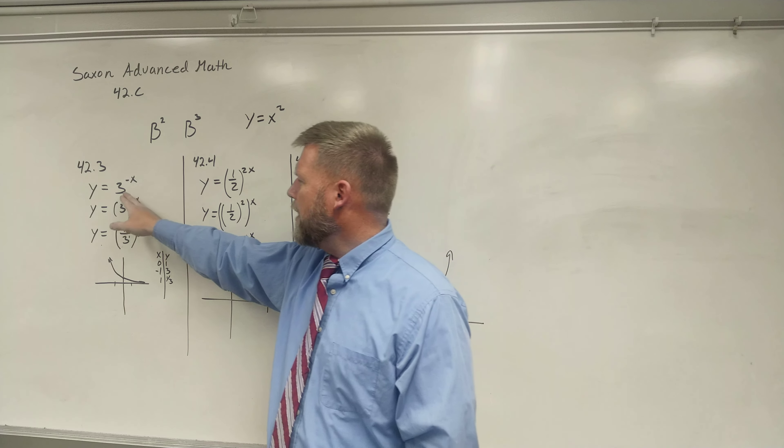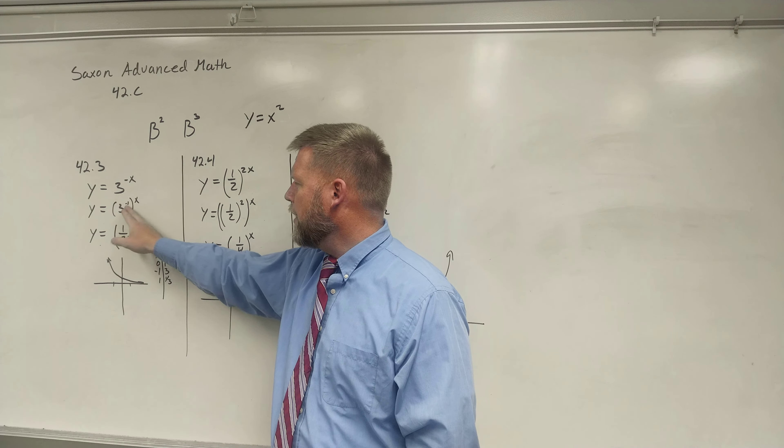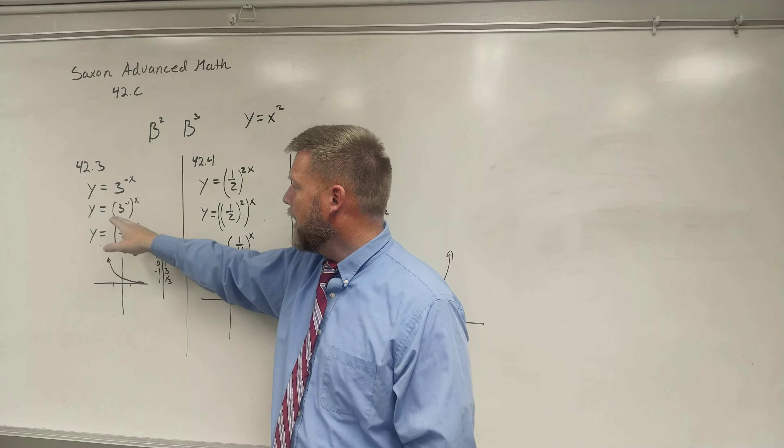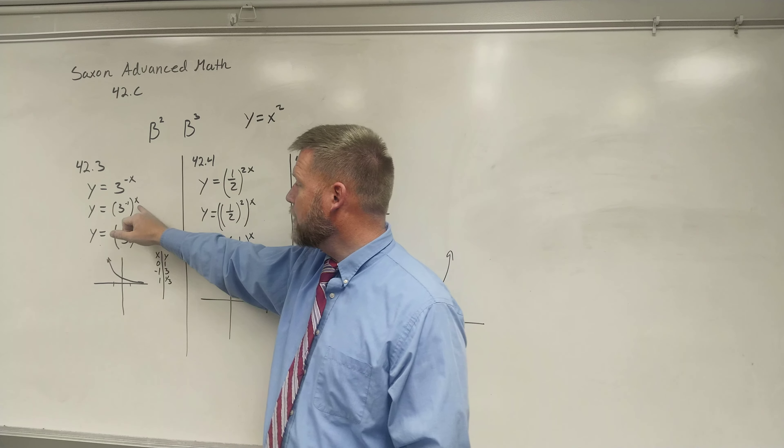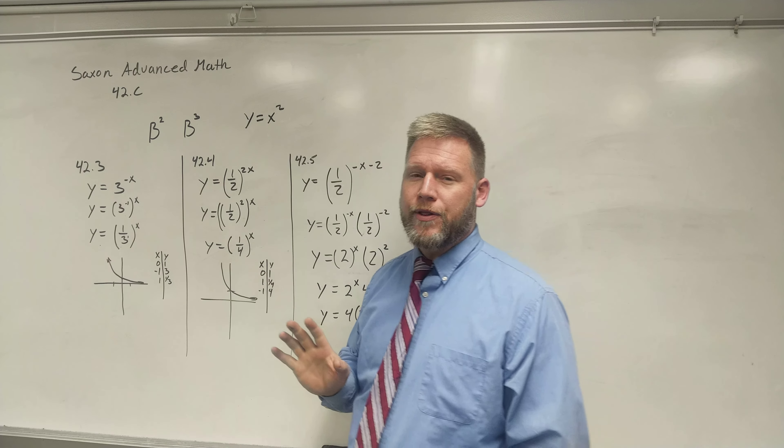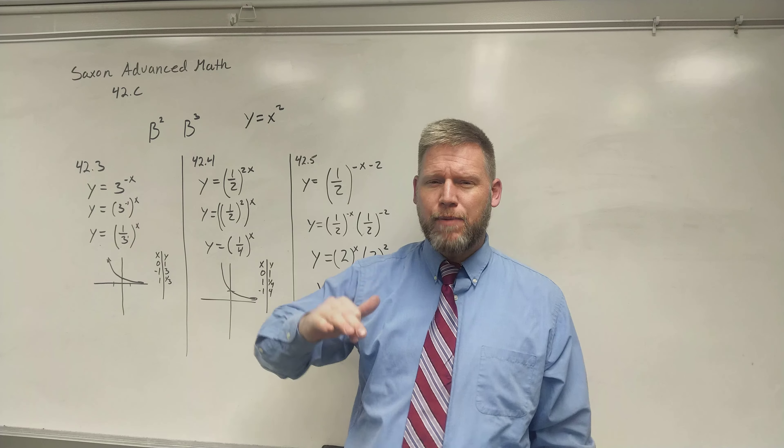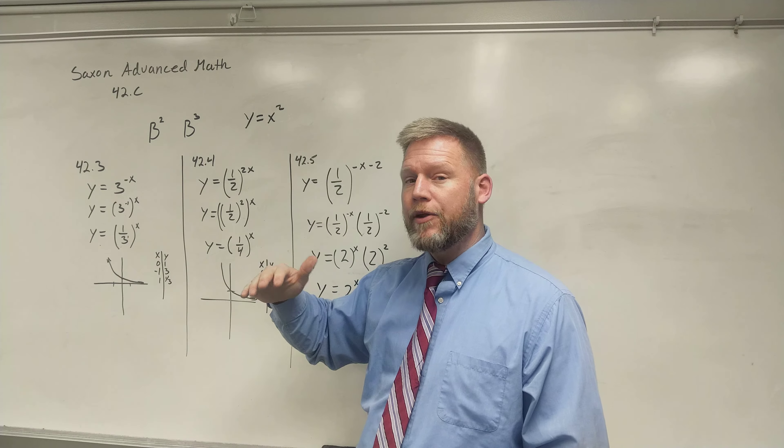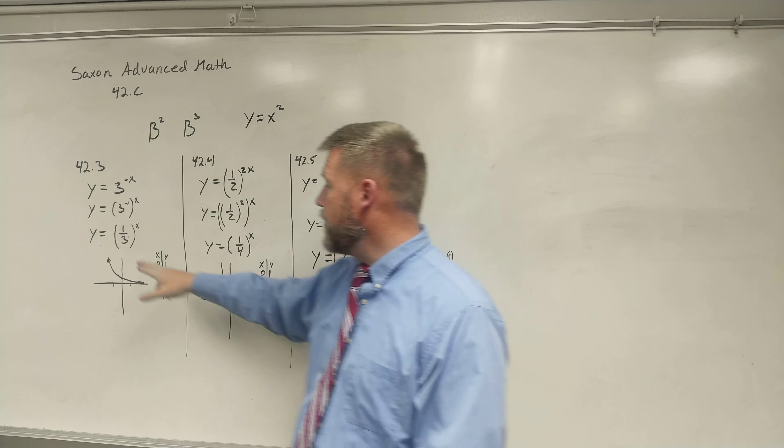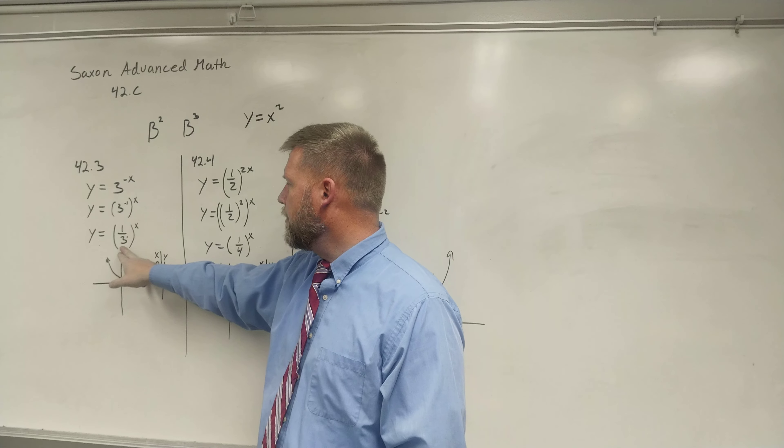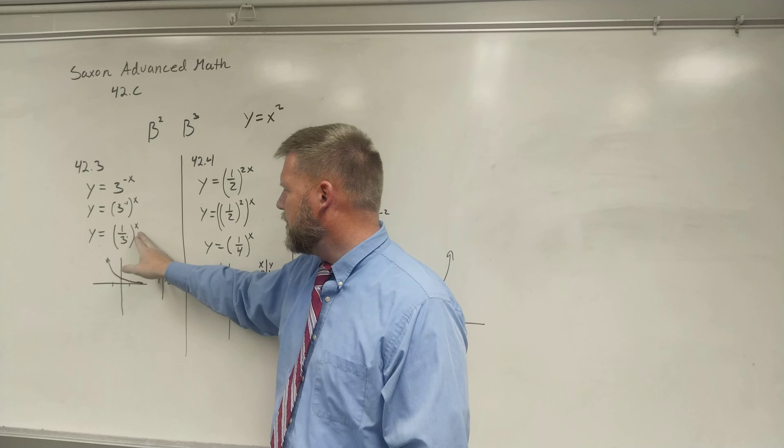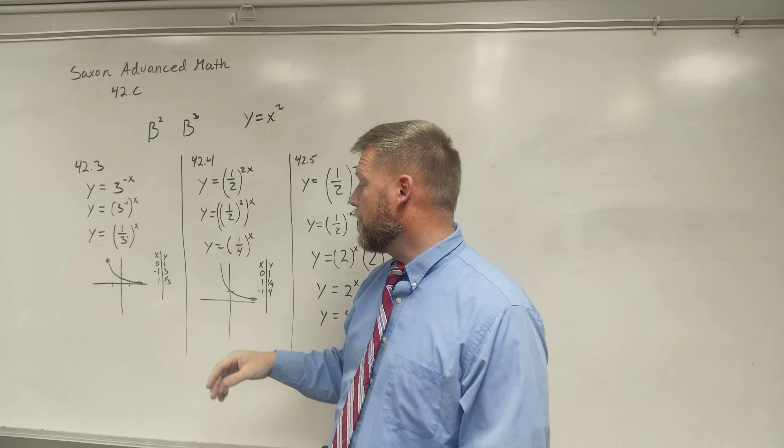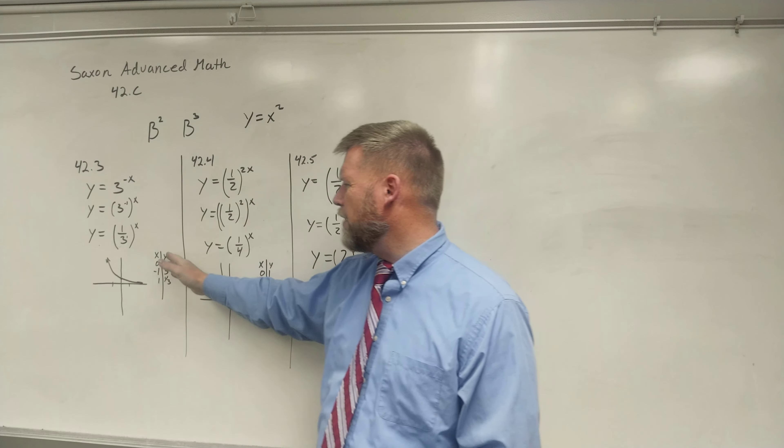So what we're going to do is we're going to rewrite that as a power with a power, an exponent to a power, by using parentheses and saying 3 to the negative 1 to the x power. That's going to also simplify 3 to the negative 1. Anything to the negative power like that, I can put underneath in the denominator. So it becomes 1 over 3 to the 1. When I do so, I already know what to do now because this is 1 over 3 to the x power.